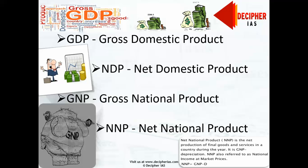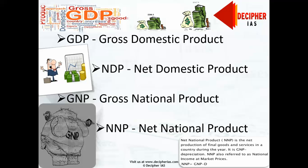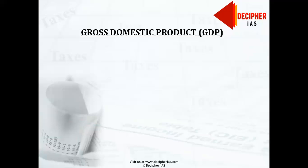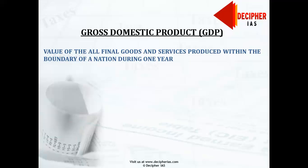Let's start with Gross Domestic Product, or GDP. Gross Domestic Product, GDP, is the value of all the final goods and services produced within the boundary of the nation during one year. For example, this one year is a calendar year from 1st April to 31st March. Let's understand the same word by word.